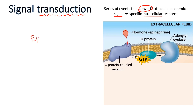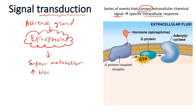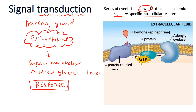We will consider epinephrine as an example. Epinephrine is a water-soluble hormone, also known as adrenaline, released by the adrenal gland in a stressful situation. It regulates many organs including the liver, and one of its responses is in sugar metabolism — where it helps to raise blood glucose level. So the response of epinephrine is to increase blood glucose level.